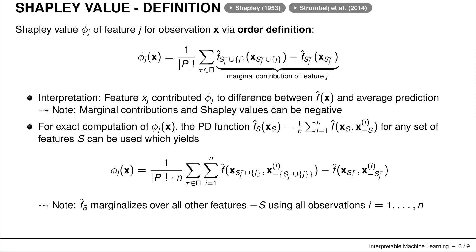To define the Shapley value in the machine learning context, we have the Shapley value φ_j — that's the Shapley value for feature j of an observation x — using the ordering definition from the game theory part. φ_j(x) is the sum over all possible orderings — actually the average of all possible orderings, which is why we divide by the number of possible orderings — and we take the prediction of the coalition including feature j minus the prediction of the coalition not including it.